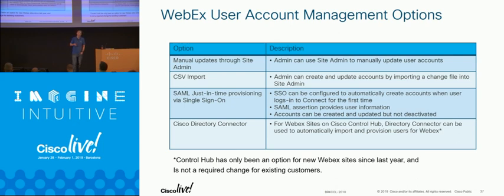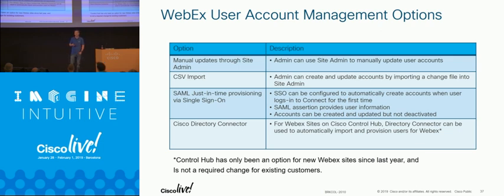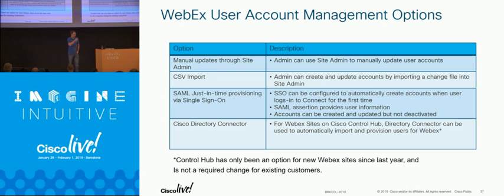The final method is Directory Connector — our newest way of integrating with on-prem AD or Azure Active Directory. Cisco Directory Connector accesses the customer's directory information, finds your users, and you can apply an Active Directory filter or container filter to add the users you pick. It does exactly the same thing as SAML JIT provisioning but pulls directly from the directory.